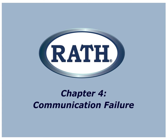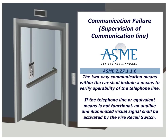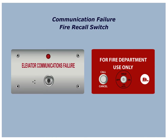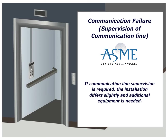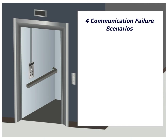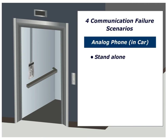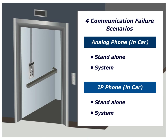Chapter 4: Communication Failure. The code referenced in this section is the ASME A17.1 2.27.1.1.6. The two-way communication means within the car shall include a means to verify the operability of the telephone line. If the telephone line or equivalent means is not functional, an audible and illuminated visual signal shall be activated by the fire recall switch. If communication line supervision is required, the installation differs slightly and additional equipment is needed. We will outline four communication failure scenarios: a stand-alone analog phone, an analog phone as part of an IP system, a stand-alone IP phone, and an IP phone as part of an IP system.